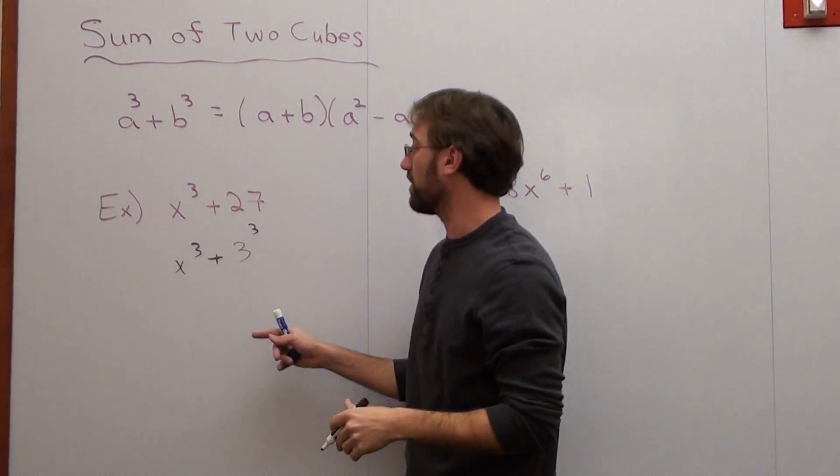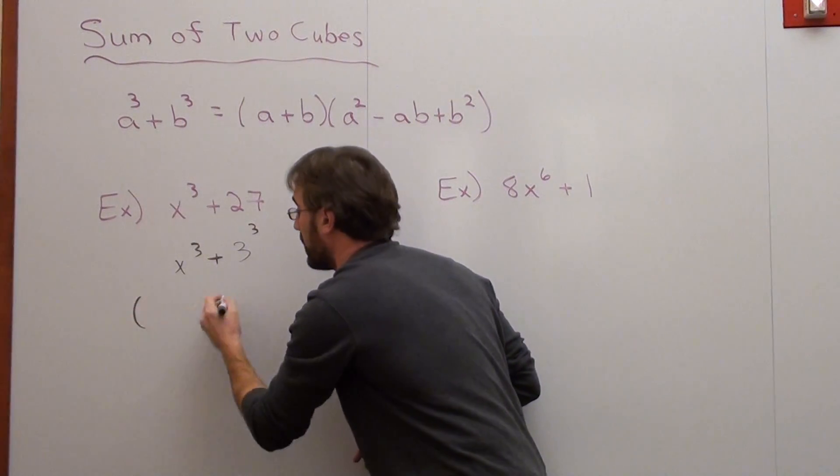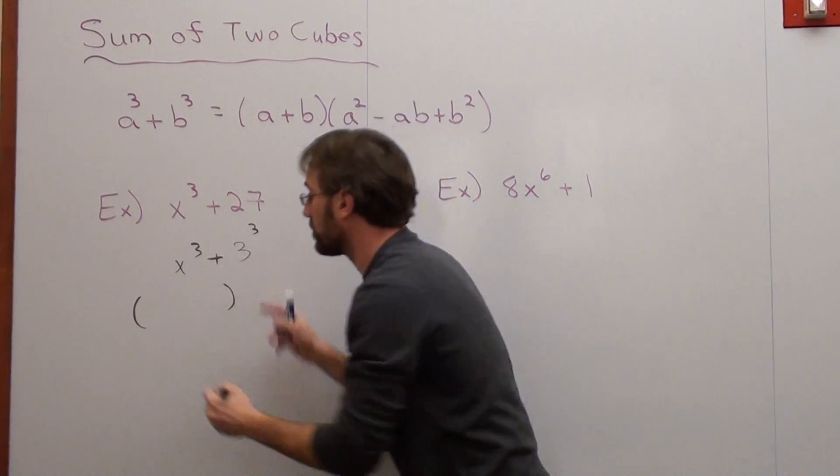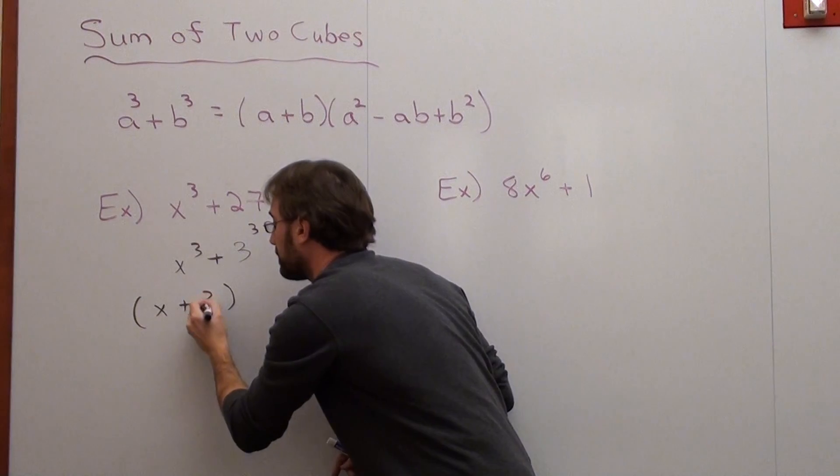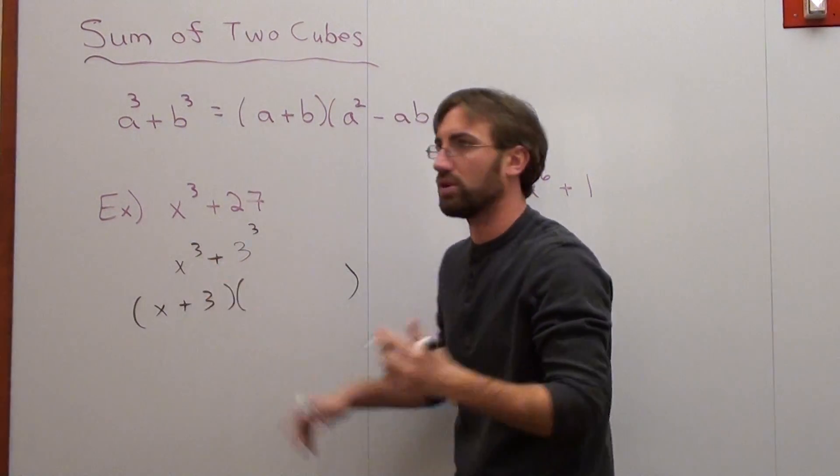So if I follow this formula, my x is my a, and my 3 is my b. So I go ahead and I do that. I put x + 3. And here's what I tell my students. If you want an x³ and you have an x, put an x².